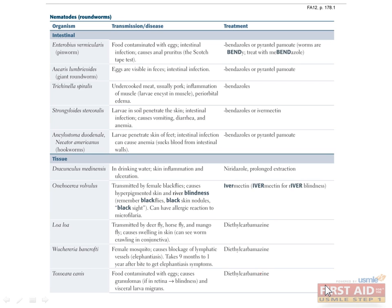Now let's move on to the other type of parasite known as helminths, or worms. These are multicellular parasites which cause eosinophilia in their human host. This is because eosinophils contain major basic protein, which is released in an attempt to kill the worms. There are three types of helminths: nematodes or roundworms, cestodes or tapeworms, and trematodes or flukes. Let's start with the nematodes, which we've broken down into those that cause intestinal infections and those causing tissue infections.